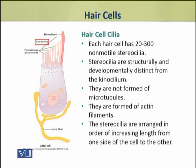The stereocilia have a structure which is not like motile cilia — they are non-motile ciliary structures, structurally and developmentally distinct from the kinocilium. Yeh kinocilium jaise nahi hai; inka structure bhi aur inka developmental origin bhi stereocilia se mukhtalif hai. They are not formed of microtubules; rather they are formed of actin filaments. These stereocilia are arranged in order of increasing length from one side of the cell to the other.